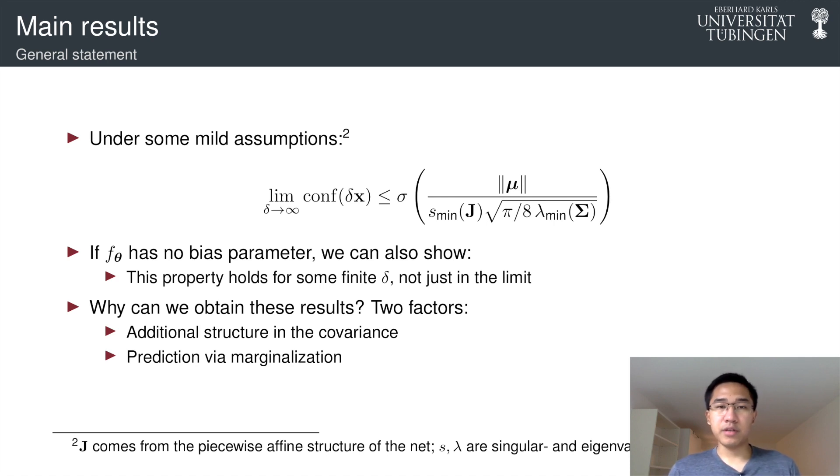And secondly, even if we have a full distribution over the weight, if we don't use it, then it's useless. So the second key factor here is really because we use marginalization to make prediction.